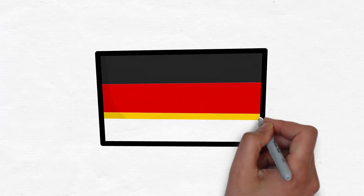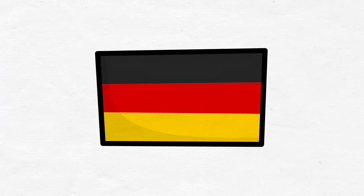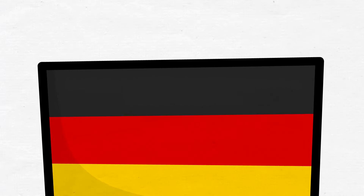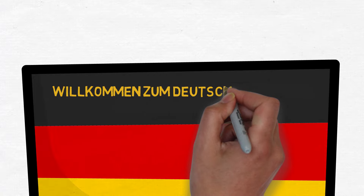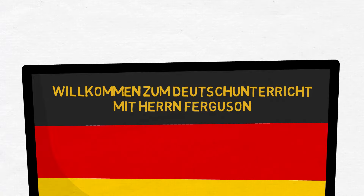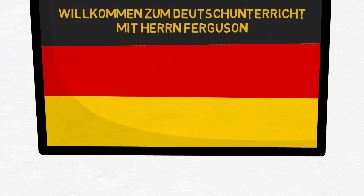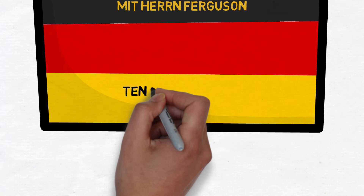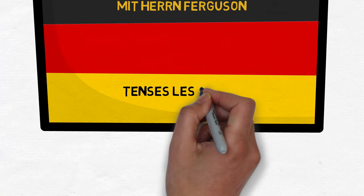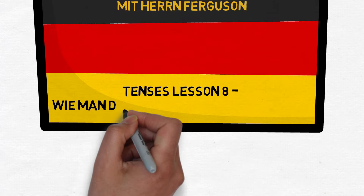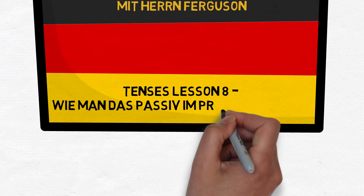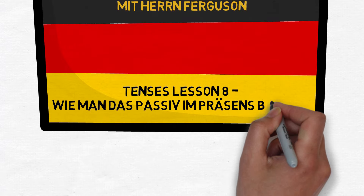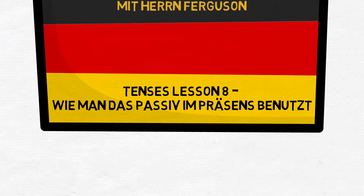Hello and welcome to German Lessons with Mr. Ferguson. Hallo und herzlich willkommen zum Deutschunterricht mit Herrn Ferguson. Diese achte Stunde über die Zeitformen — this eighth Tenses lesson — ist wie man das Passiv im Präsens benutzt. How to use the passive voice in the present tense.